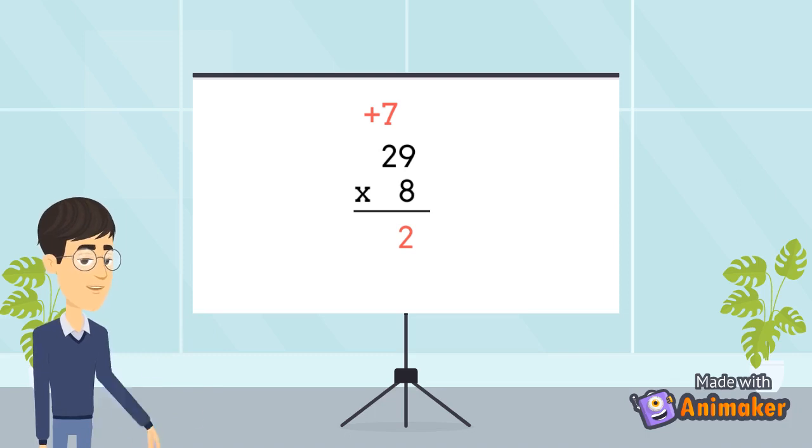So, sixteen and seven is twenty-three. So, we will write the result twenty-three in the output or the product. So, our result is two, three, two or two hundred and thirty-two.